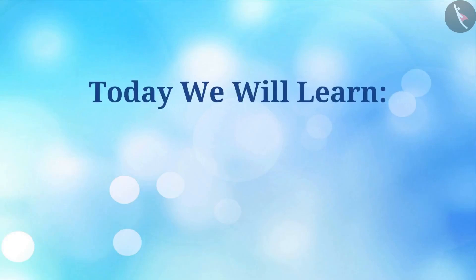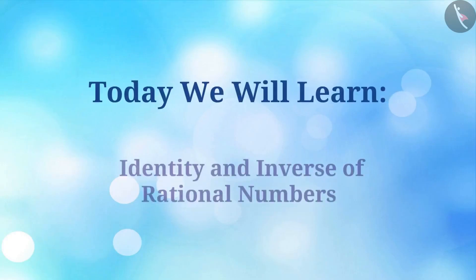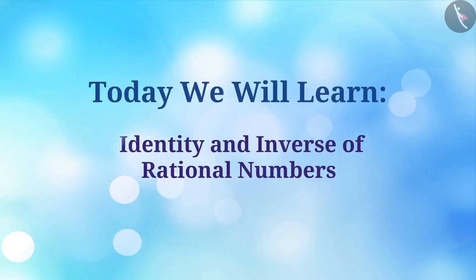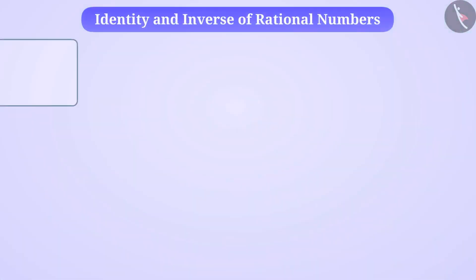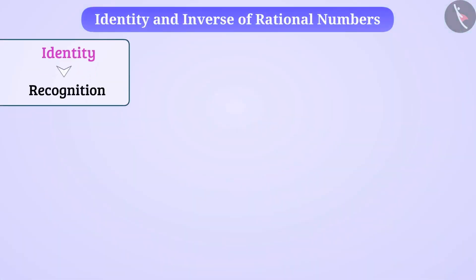Today we are going to learn about identity and inverse of rational numbers. Identity means recognition. Often in mathematics, the identity of numbers gets changed because of different operations on it.